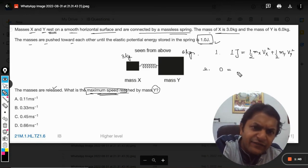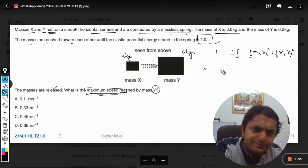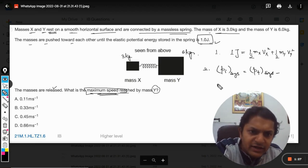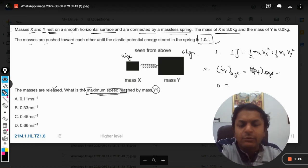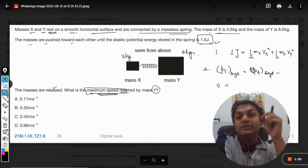So we will say that initial momentum for the complete system equals the final momentum for the system. Initial momentum is zero. Now because momentum is a vector, we have to choose one direction as positive and another as negative. Let us say Y is moving in this direction, this will be positive, X will be negative. So mass of Y into VY minus mass of X into VX.